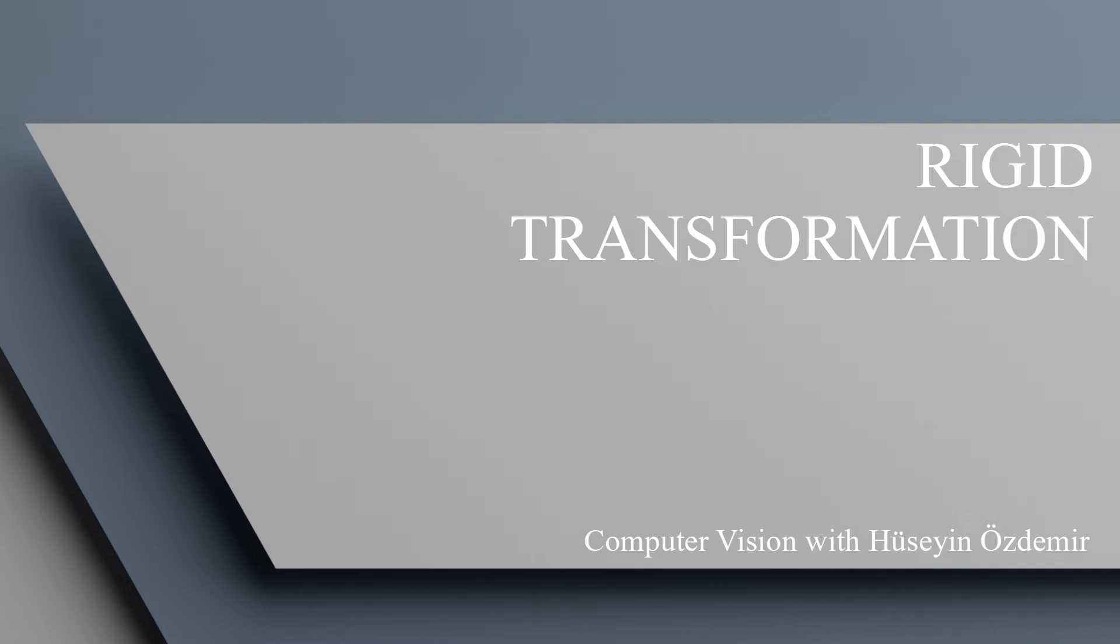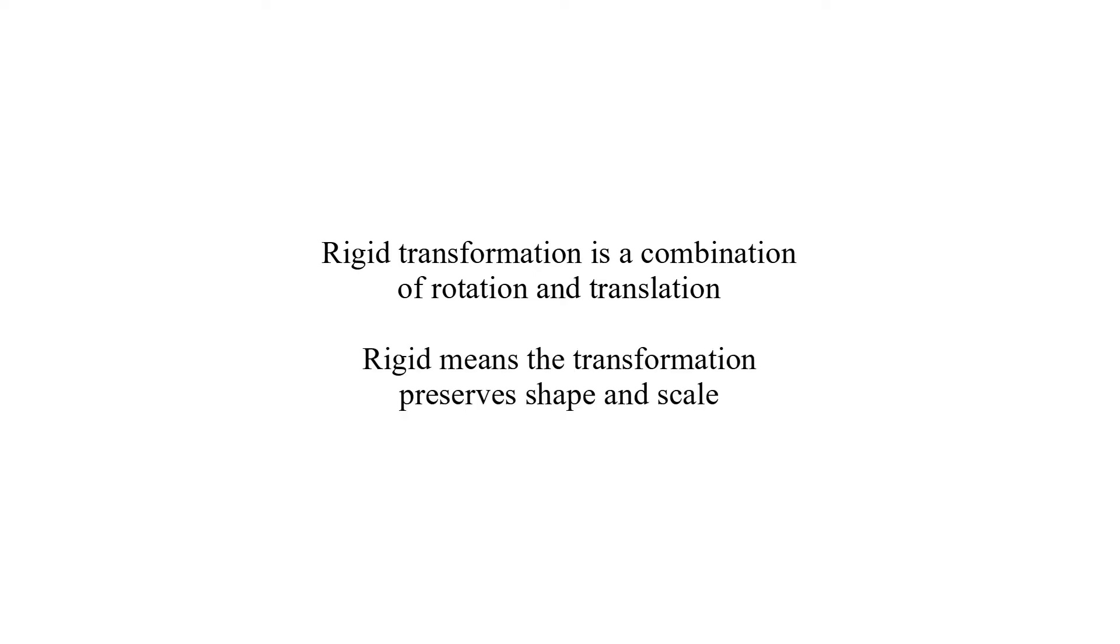Hi, in this video I will talk about rigid transformation. Rigid transformation is a combination of rotation and translation. Rigid means the transformation preserves shape and scale.